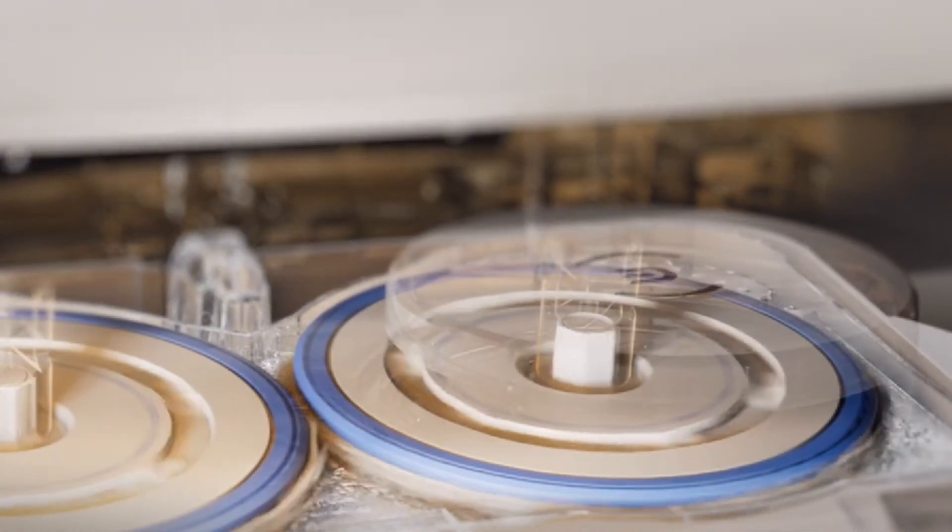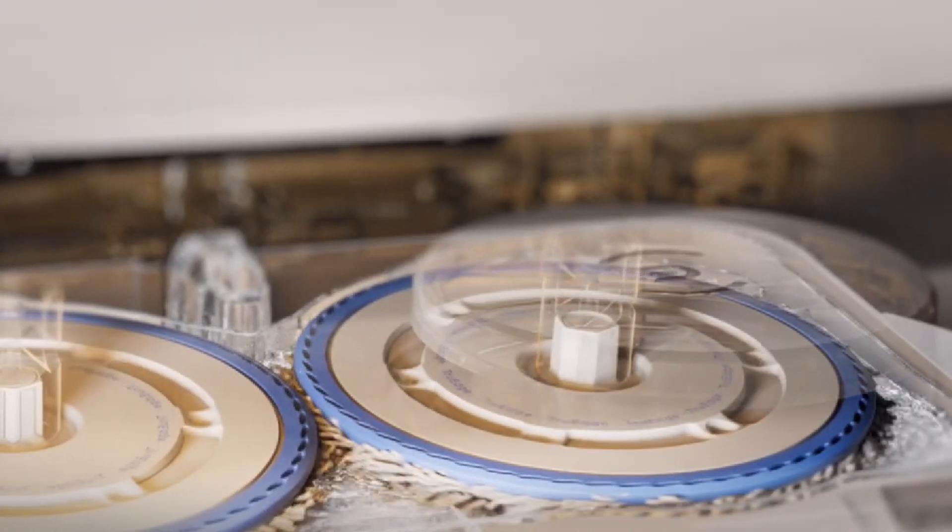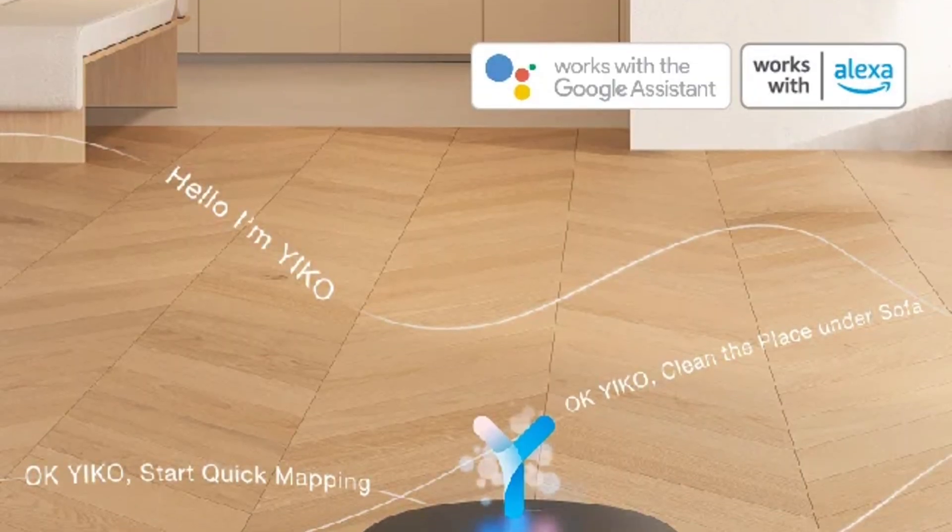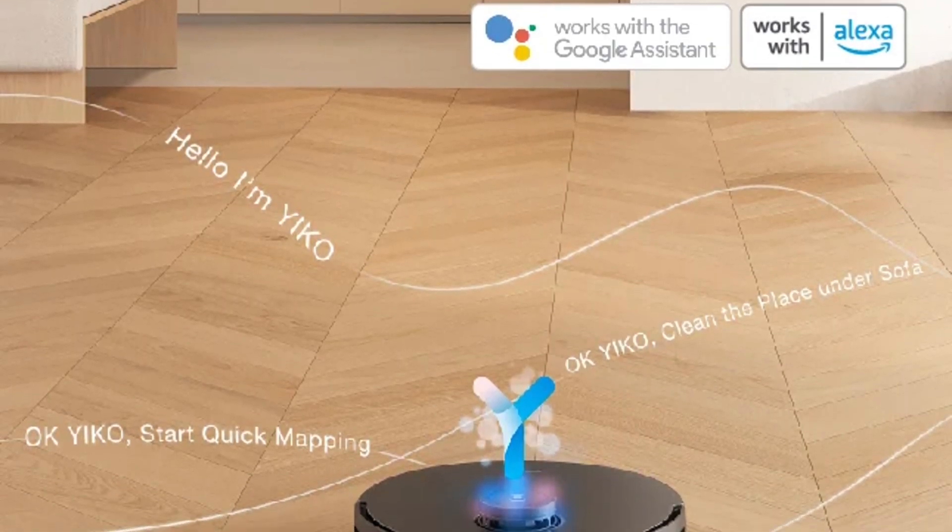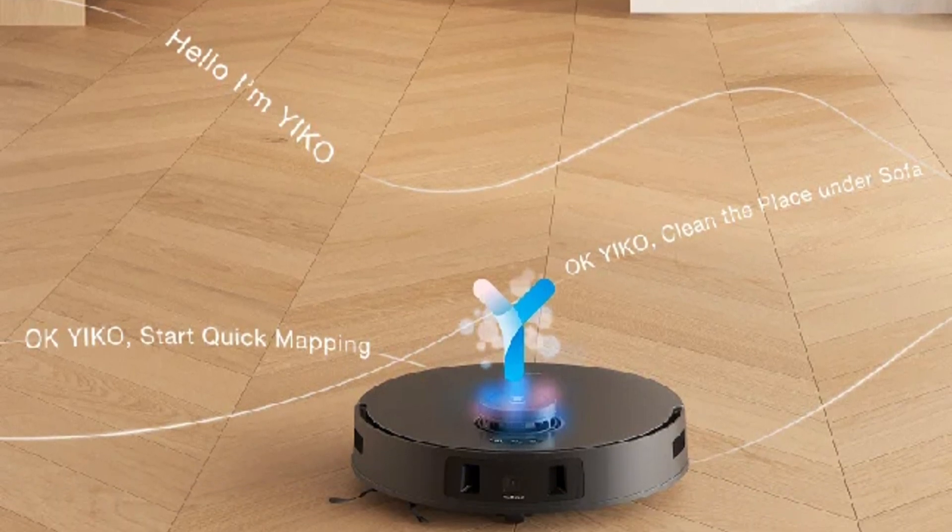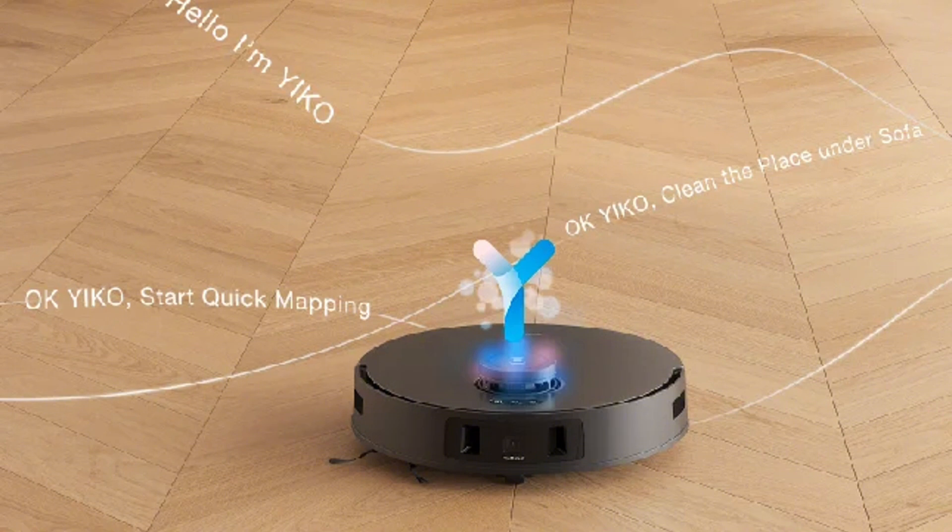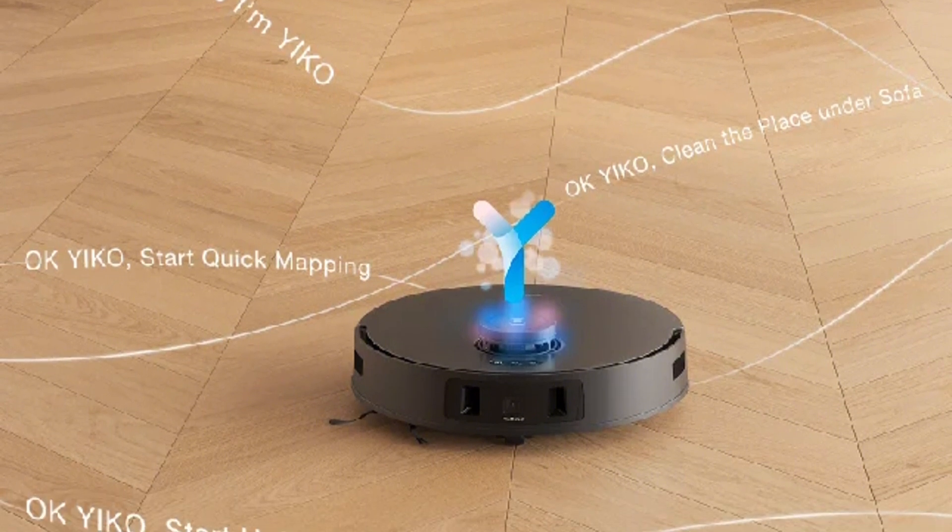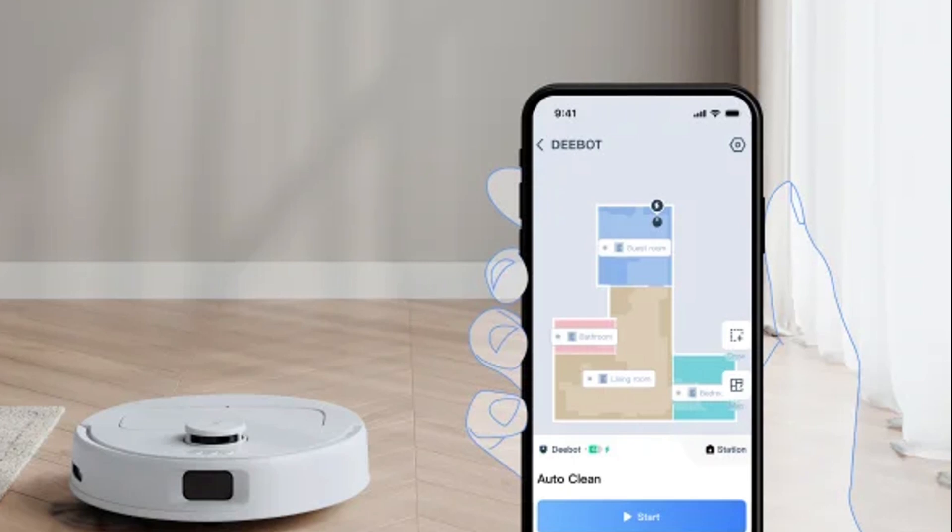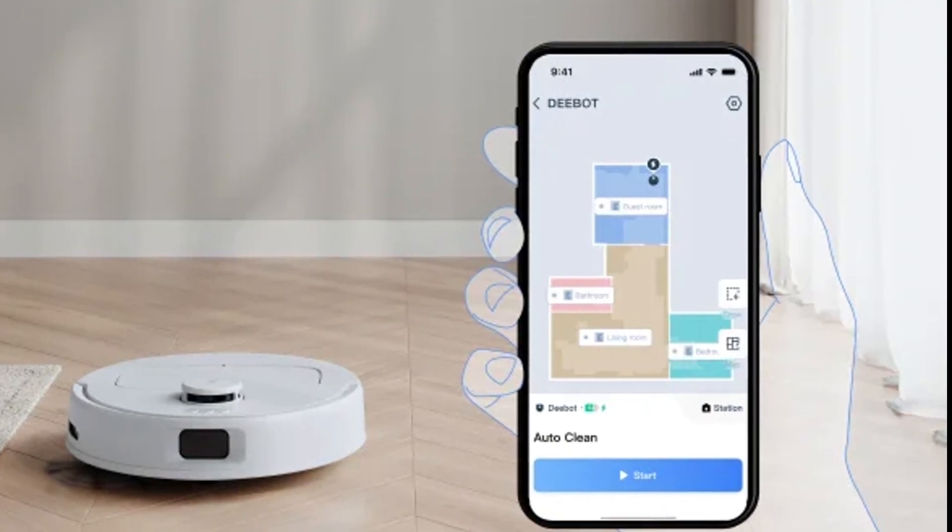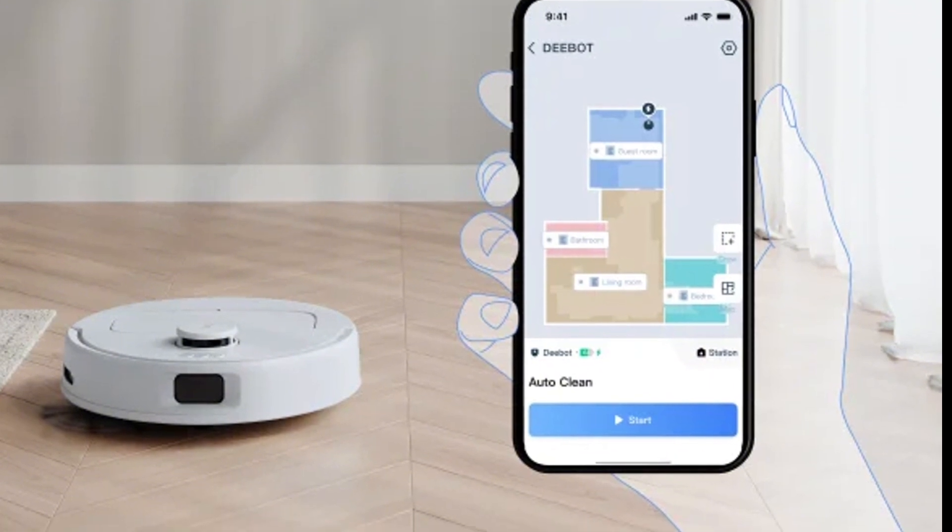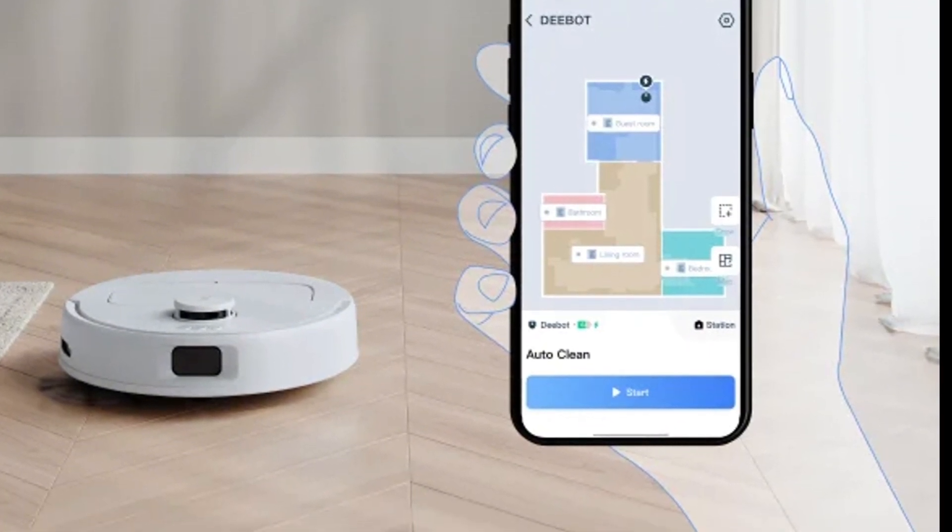One of the standout features of the D-Bot T30 is its compatibility with smart home devices. With built-in Wi-Fi connectivity, you can control the vacuum via a mobile app or through voice commands using popular smart home assistants like Amazon Alexa or Google Assistant. This means you can start, stop, or schedule cleanings from anywhere, giving you complete control over your cleaning routine. You can also receive real-time updates and notifications about the cleaning status, making it easy to stay informed.